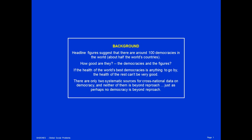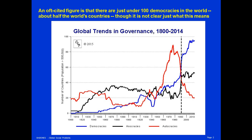If the health of the world's best democracies is anything to go by, the health of the rest can't be very good. There are only two systematic sources for cross-national data on democracy, and neither of them is beyond reproach, just as perhaps no democracy is itself beyond reproach. An often-cited figure is that there are just under 100 democracies in the world, though it's not clear exactly what this means. The number comes from the Center for Systemic Peace Polity4 research project, which produces graphs like the one you see here, charting the number of democracies from the year 1800 up to 2014.